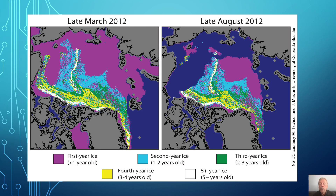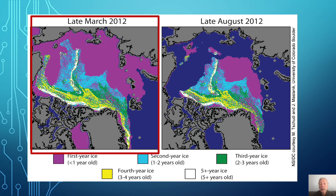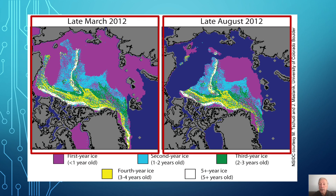In our present interglacial, sea ice grows each winter and then melts each summer. But typically, only the thin first-year sea ice, represented by the purple color, is lost, allowing heat to ventilate. The following winter, summer's open water is covered again by the new ice.